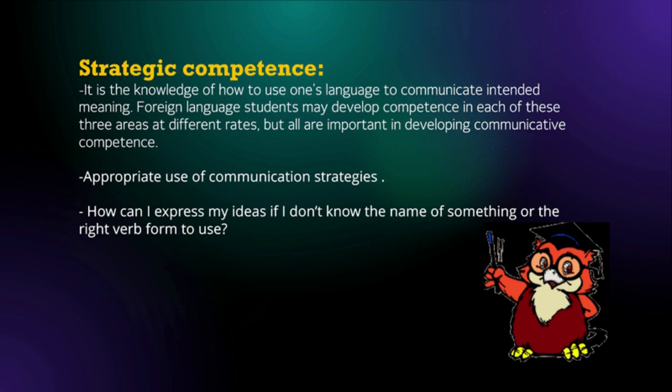Next, we have strategic competence. It is the knowledge of how to use one's language to communicate intended meaning. Foreign language students may develop competence in each of these three areas at different rates, but all are important in developing communicative competence. Strategic competence means that grammatical, sociolinguistic, and strategic components are combined together in communicating to other people. It is the appropriate use of communication strategies. An example question: How can I express my ideas if I don't know the name of something or the right verb form to use?